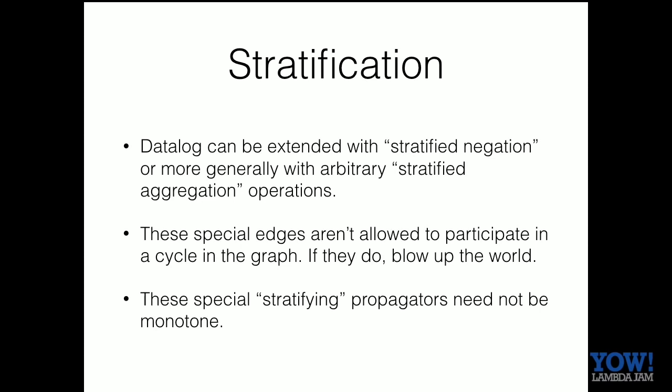There are other things we steal from datalog. Datalog has the ability to say there is no ancestor of this, or there's not something in this table. These negation edges in datalog are special — they're not allowed to participate in any cycles. But in the propagator network, we could add these special kinds of propagator edges that can be non-monotone functions — they're just not allowed to participate in any cycles. Monotonicity was what enabled us to participate in cycles and have nothing ever go wrong. By relaxing this, we can get some interesting pieces.